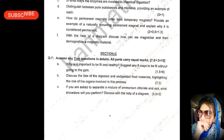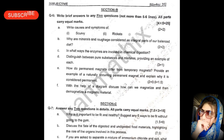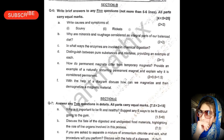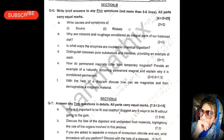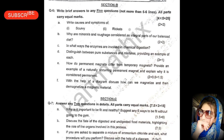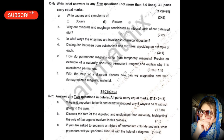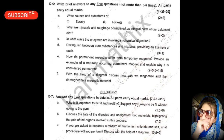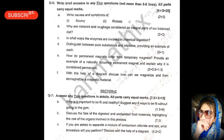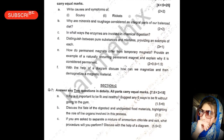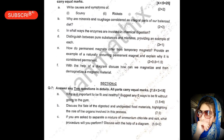Now the last page is the subjective section — 35 marks in total: 20 marks for section B and 15 marks for section C. Write brief answers to any 5 questions; all parts carry equal marks.